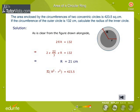The area enclosed by the circumferences of two concentric circles is given as 423.5 square centimeters, which means that π(R² - r²) = 423.5. By replacing the numerical values of π and the external radius, we get the radius of the inner circle as 17.5 centimeters.